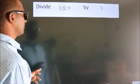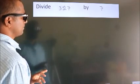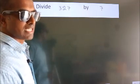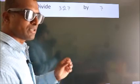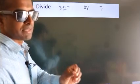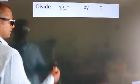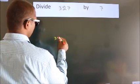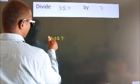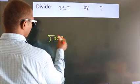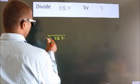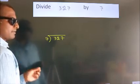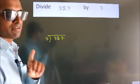Divide 327 by 7. To do this division, we should frame it in this way: 327 here, 7 here. This is your step 1.